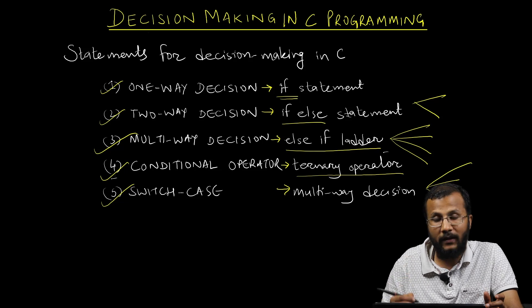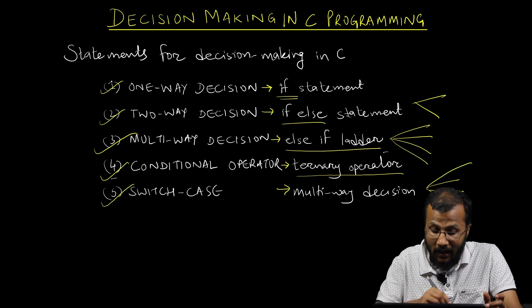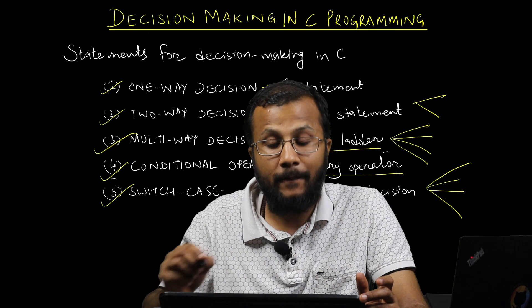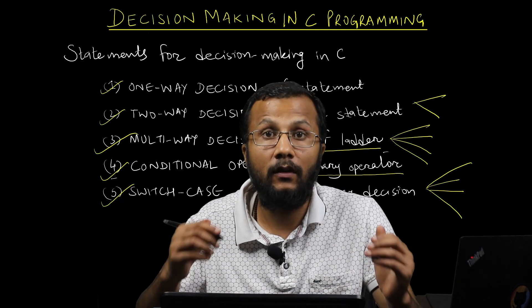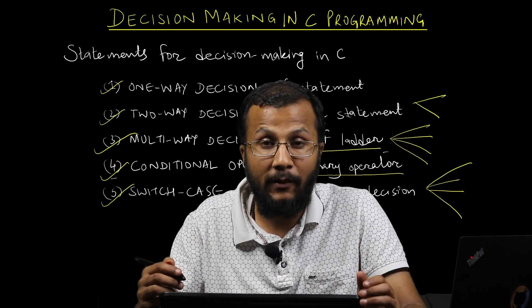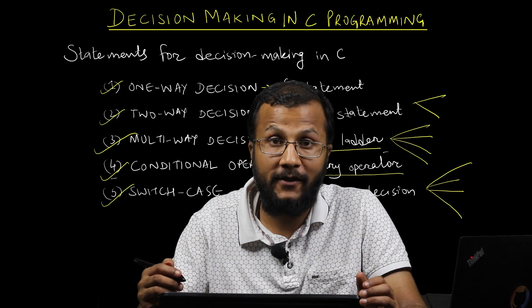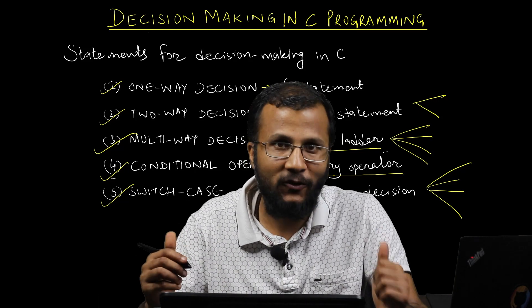What is one-way decision-making? What is multi-way decision-making? What are examples for each of these statements? We'll cover all of this, including code demonstrations, in our subsequent lectures. Until then, stay tuned.